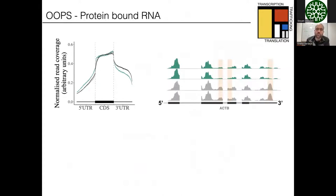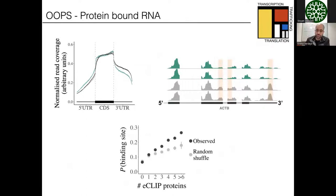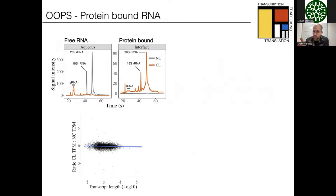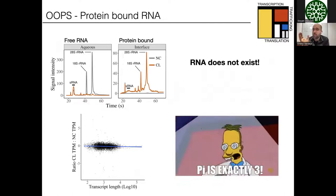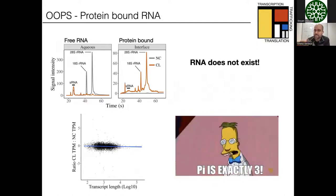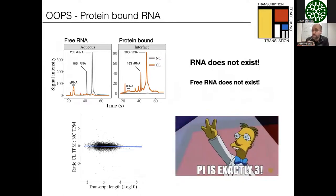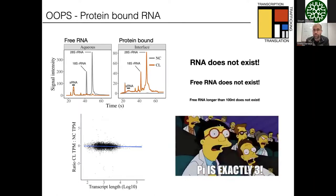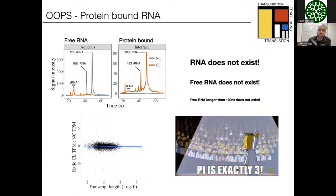This is relevant for RNA biologists and cell biologists: this perfect representation of every RNA being trapped in the interface upon cross-linking essentially means that RNA as a free-living molecule is never present in the cell. RNA is always associated with proteins. So if you care about RNA, you have to care about the RNA-binding proteins decorating it. I'm talking about RNAs longer than 100 nucleotides, which are the ones that we sequenced.